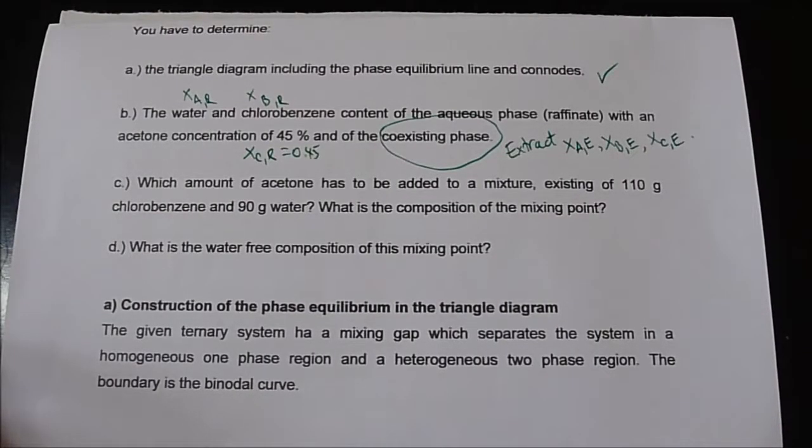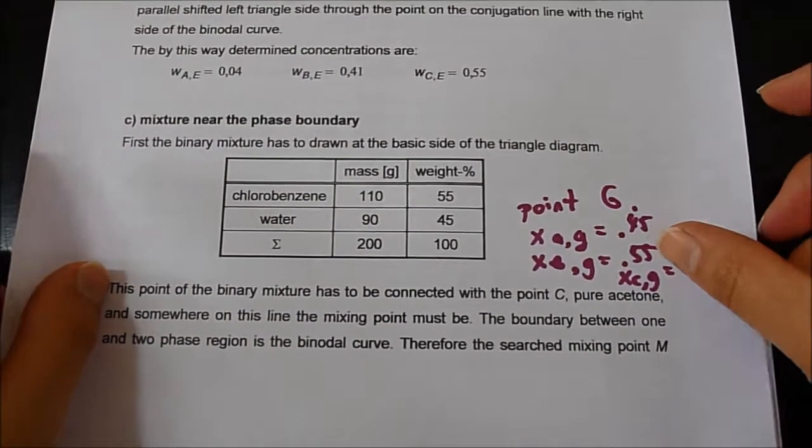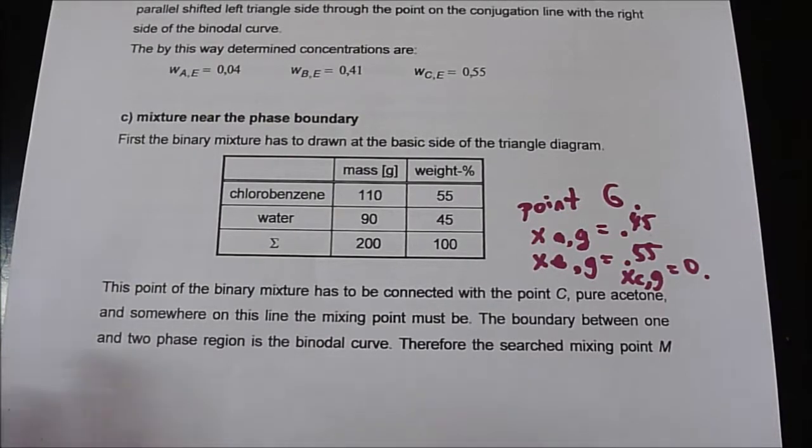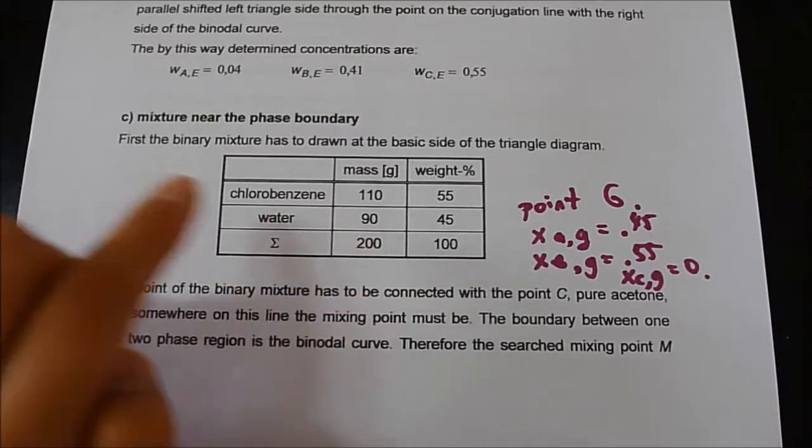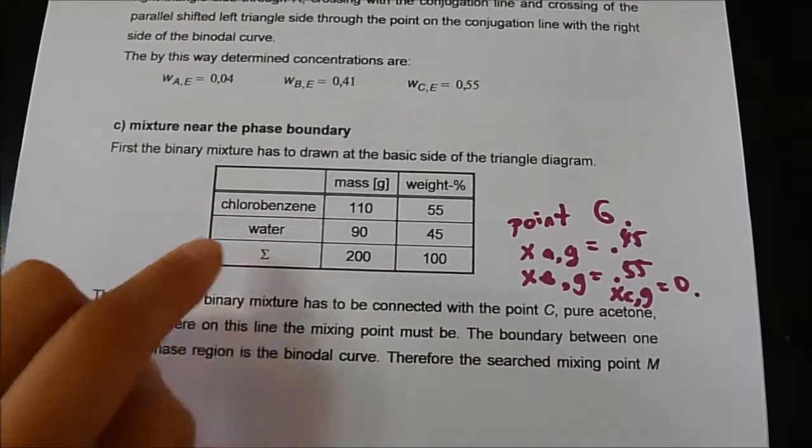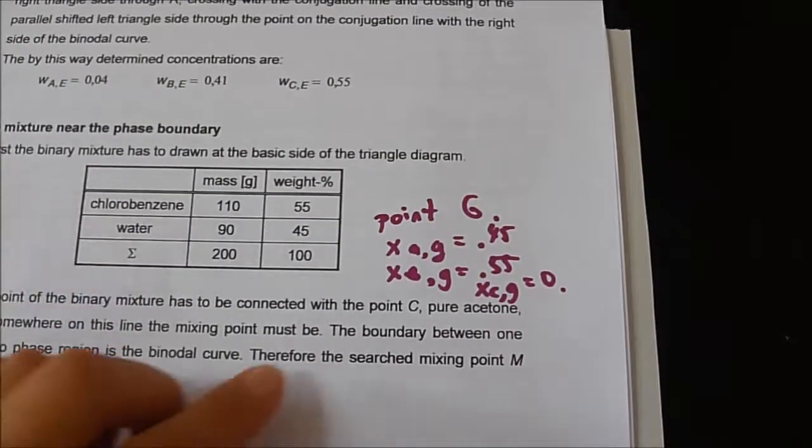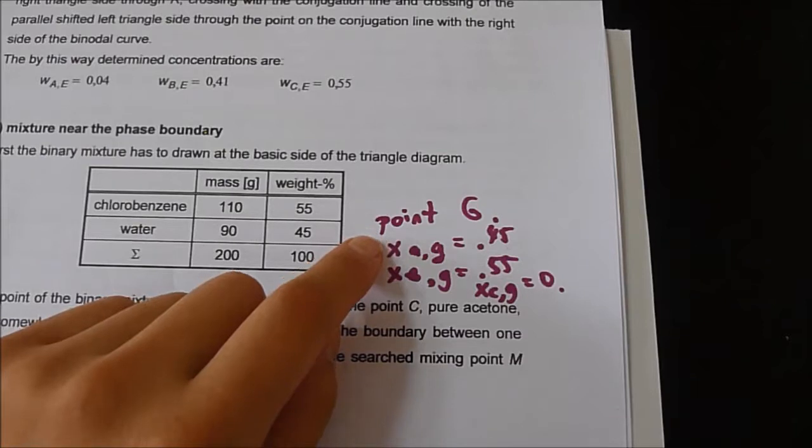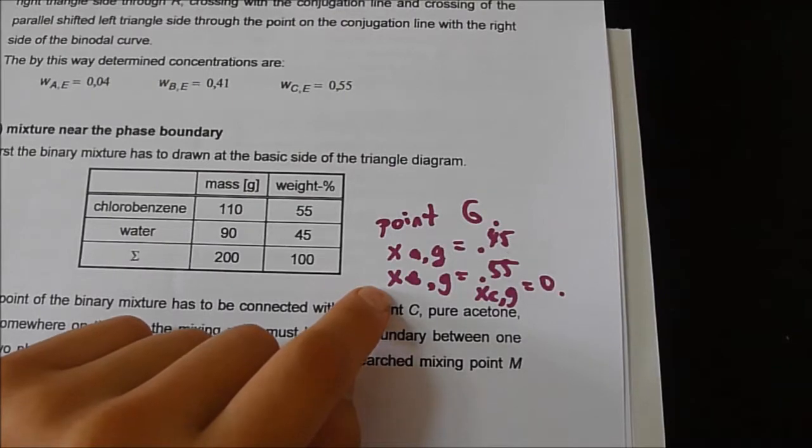Question 3 asks us, which amount of acetone has to be added to a mixture existing of 110 grams of chlorobenzene and 90 grams of water? What is the composition of the mixing point? When we put it into a table, we see chlorobenzene as 110 grams and water as 90 grams, and acetone being zero. Chlorobenzene weight percent would be 55%, water will be 45%. Let me draw it as a point G on the diagram. XAG would be 0.45, XBG would be 0.55, and XCG will be zero.